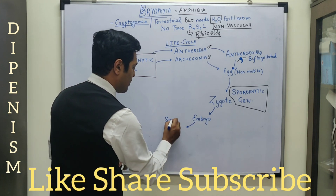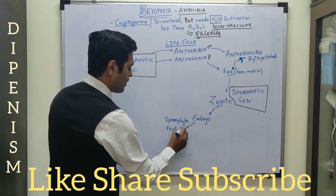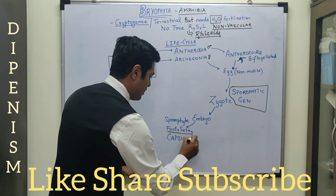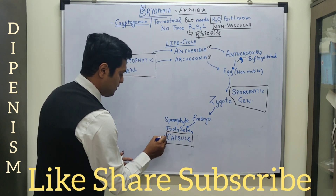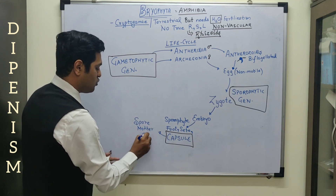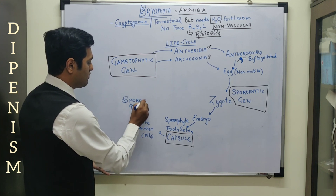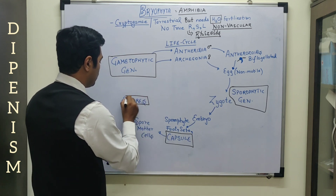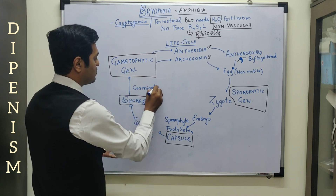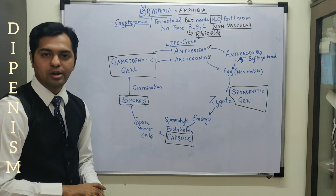The embryo will then form the sporophyte plant body. And the sporophyte plant body mainly consists of three structures — those three structures are known as the foot, the seta, and the capsule. The capsule structure mainly consists of certain cells, and these cells inside the capsule are known as the spore mother cells. The spore mother cells form the structures known as the spores. The spores then show germination, and after the germination of the spores, the next generation is again produced — that is the gametophytic generation. This is how the life cycle of bryophyta proceeds.